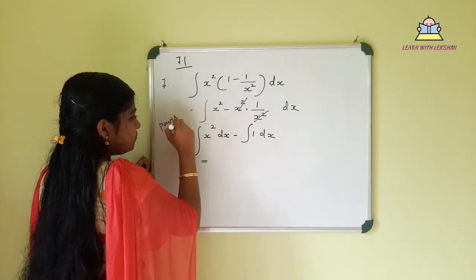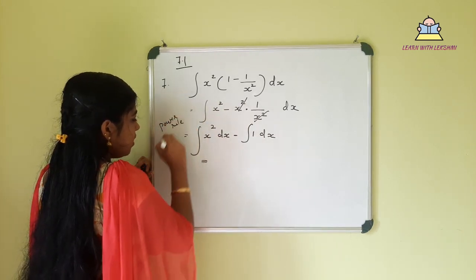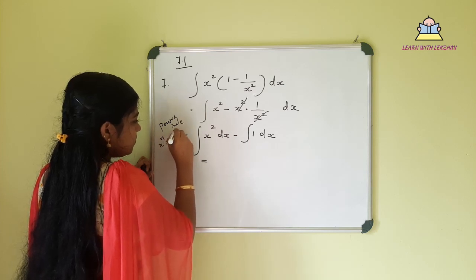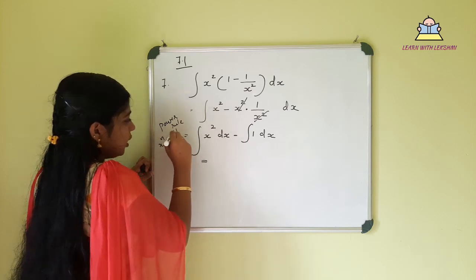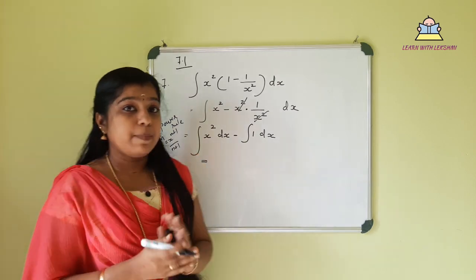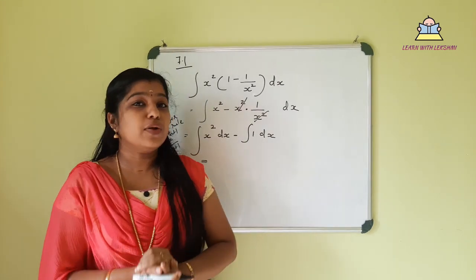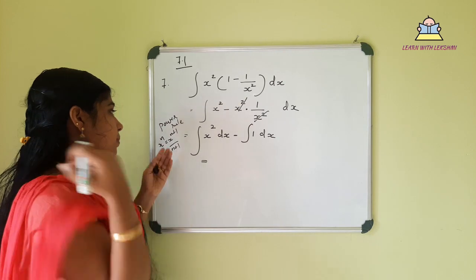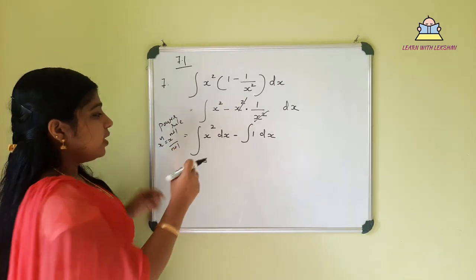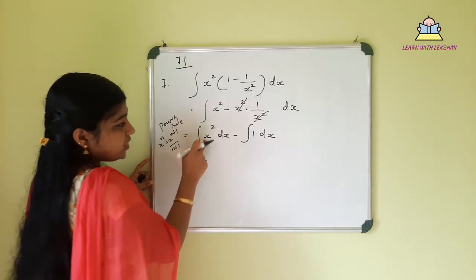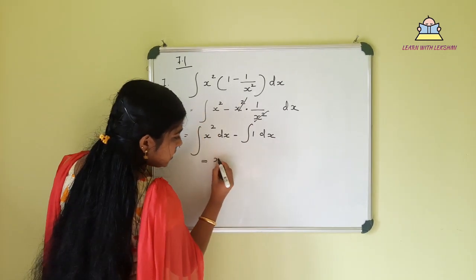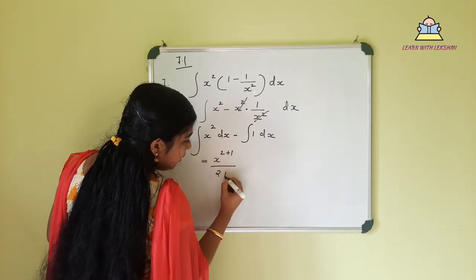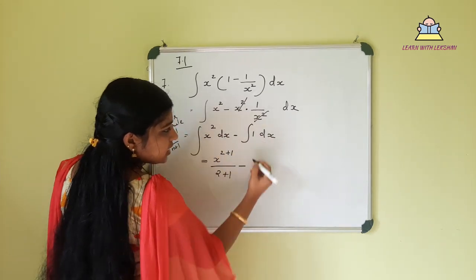We are going to use the power rule. The power rule states: integral of x raised to n is x raised to n plus 1, divided by n plus 1. Applying this, x raised to 2 integrates to x raised to 3 divided by 3, and we handle the remaining terms accordingly.